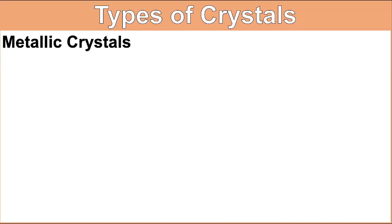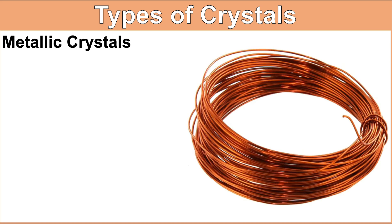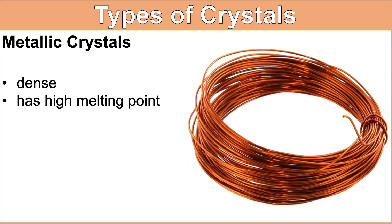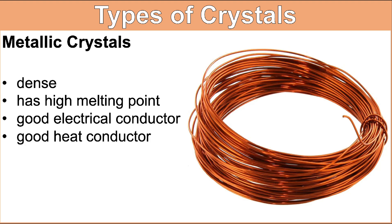Let's start with metallic crystals. One example of a metallic crystal is copper wire. If we're going to describe copper wires, they are dense — with a density of 8.9 grams per cubic centimeter. Copper wires have a high melting point, making them a good conductor of heat and electricity. You can bend a copper wire, so we describe them as malleable and ductile. They are also shiny, so we say that they are lustrous.